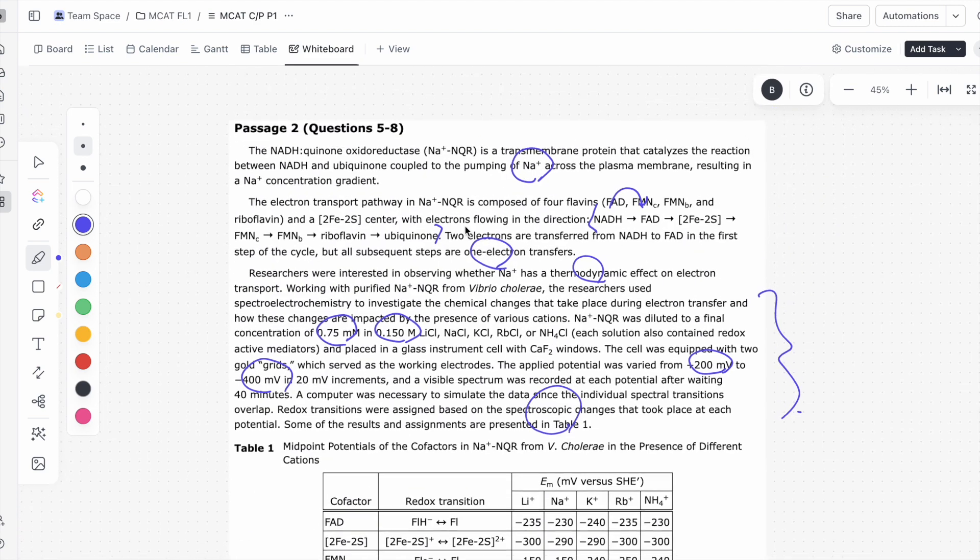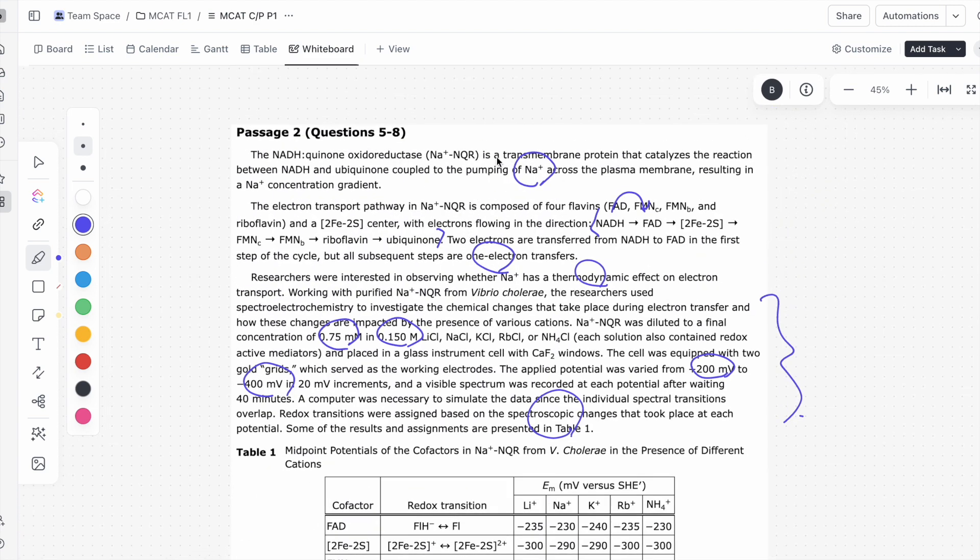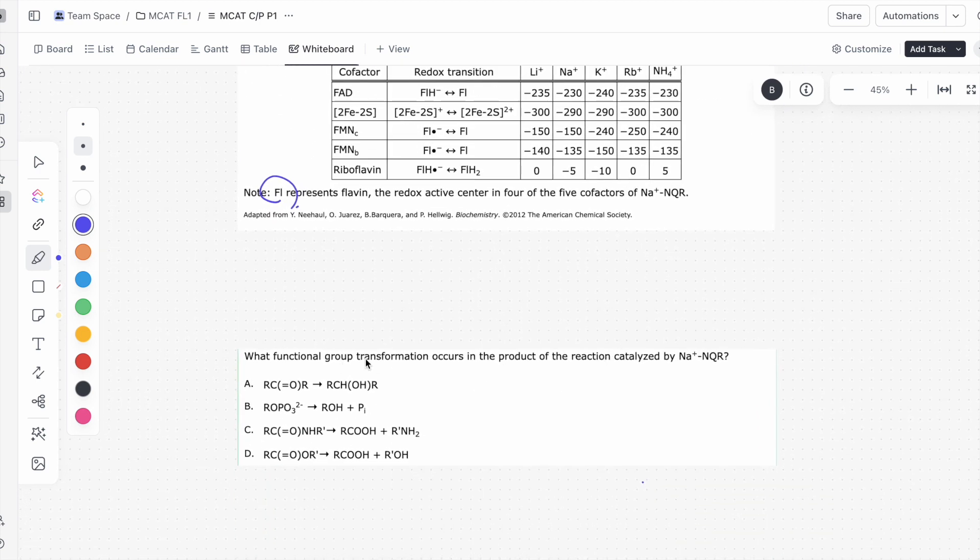What functional group transformation occurs in the product of the reaction catalyzed by the sodium NQR? And so if you have to go back to the passage, we see that it's a transmembrane protein that catalyzes the reaction between the NADH and ubiquinone. So what this hints at is that NADH, they take the electrons off of NADH, and they ultimately pass it onto ubiquinone.